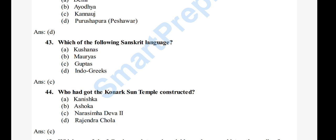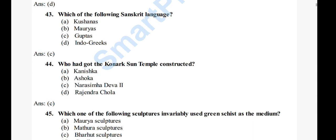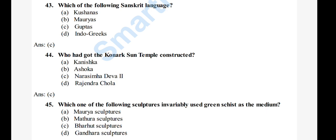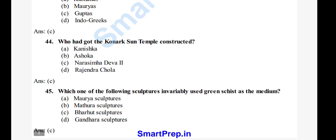Question 45: Which of the following sculptures invariably used green schist as the medium? Options: A) Mauryan sculpture, B) Mathura sculpture, C) Bharhut sculpture, D) Gandhara sculpture. The right answer is option C, Bharhut sculpture. Mathura sculpture used red sandstone.